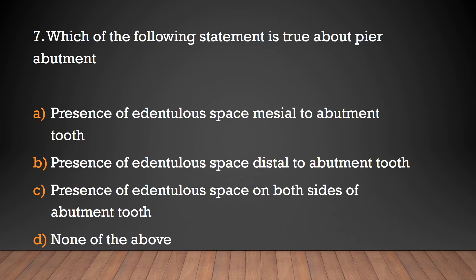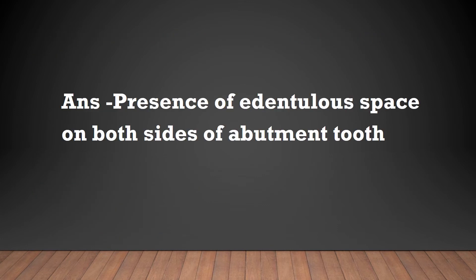Which of the following statements is true about a pier abutment? Presence of edentulous base mesial to abutment tooth, presence of edentulous base distal to abutment tooth, presence of edentulous base on both sides of abutment tooth, or none of the above? The answer is presence of edentulous base on both sides of abutment tooth.